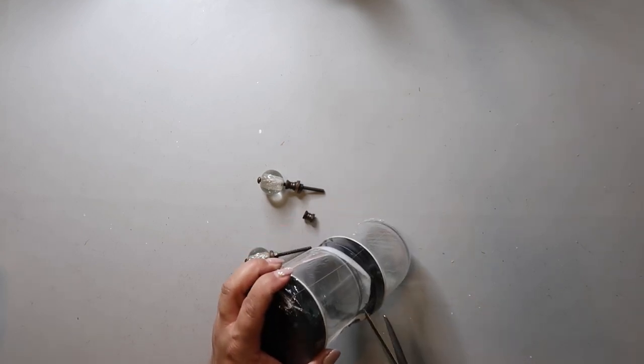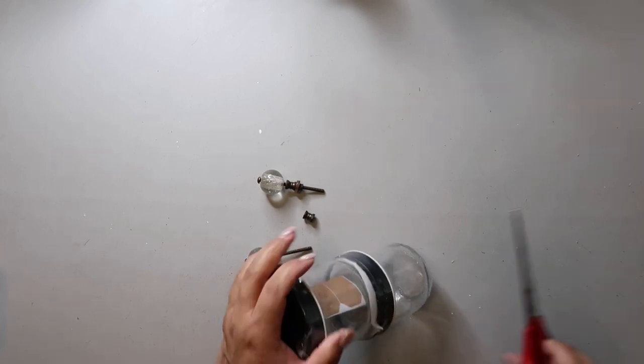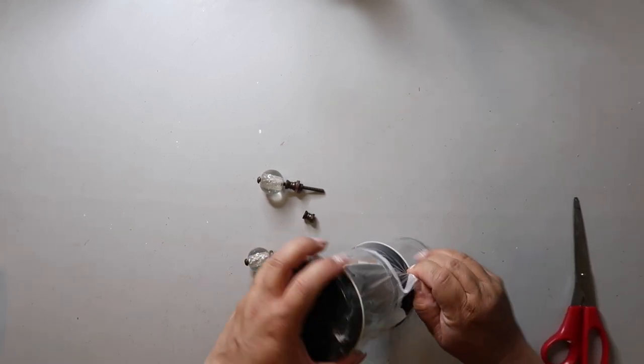These glass jars are a Target dollar spot find from a couple of years ago. They've been in my stash and I thought that this would be the perfect time to use them. I'm going to find the center of the lid so I can drill a hole to put the knob in.